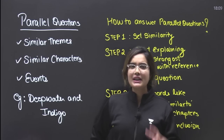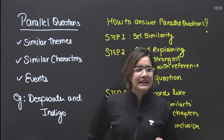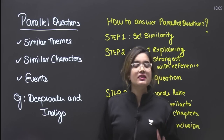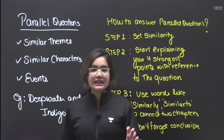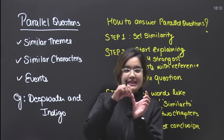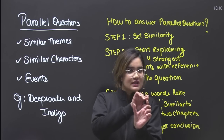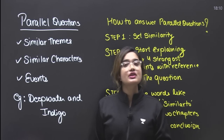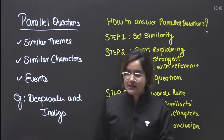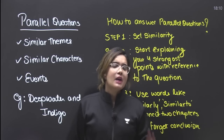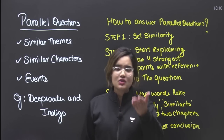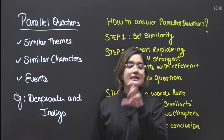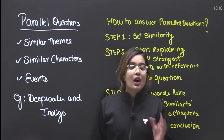What are parallel questions? A parallel question is one where a common statement is shared between two chapters — two characters or two events will be connected. That means a statement will be explained with reference to one chapter and another chapter, one character and another character, one event and another event. For example, Deep Water and Indigo — think about a statement like 'which way do we need to kill our fear?'